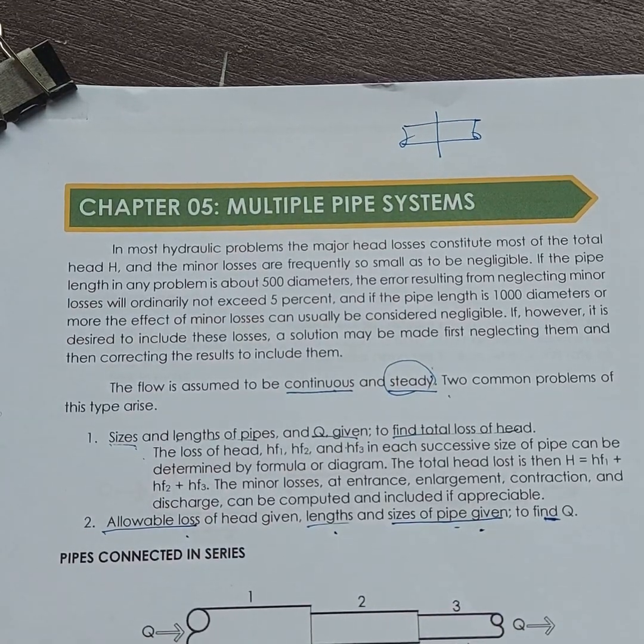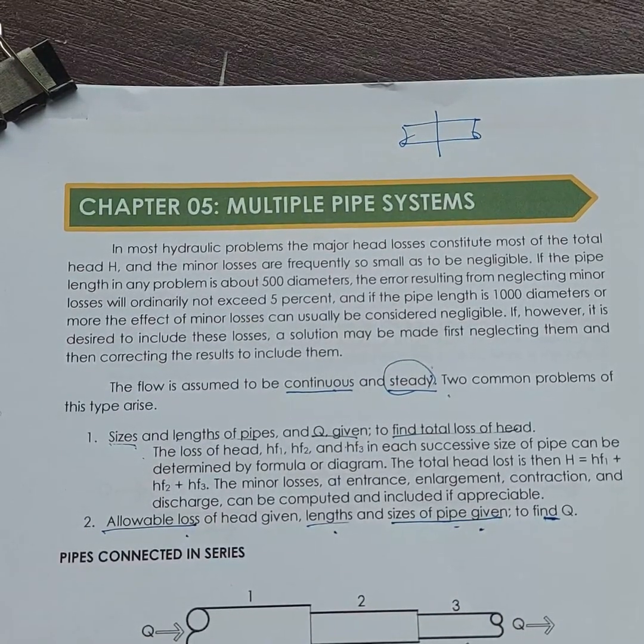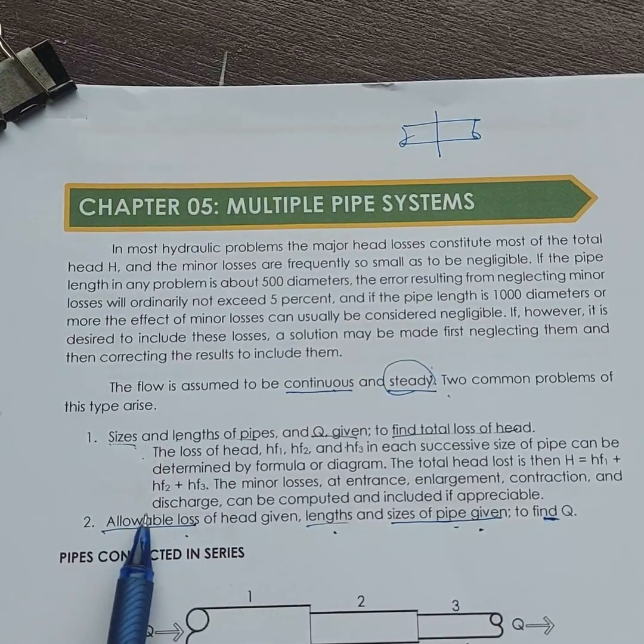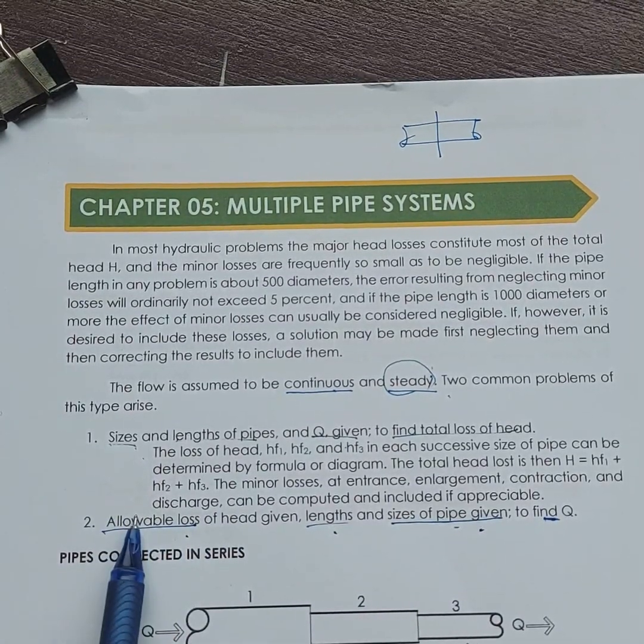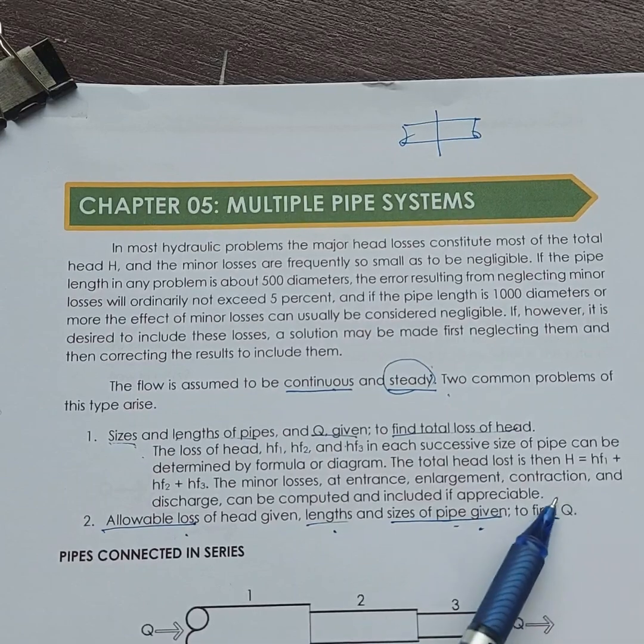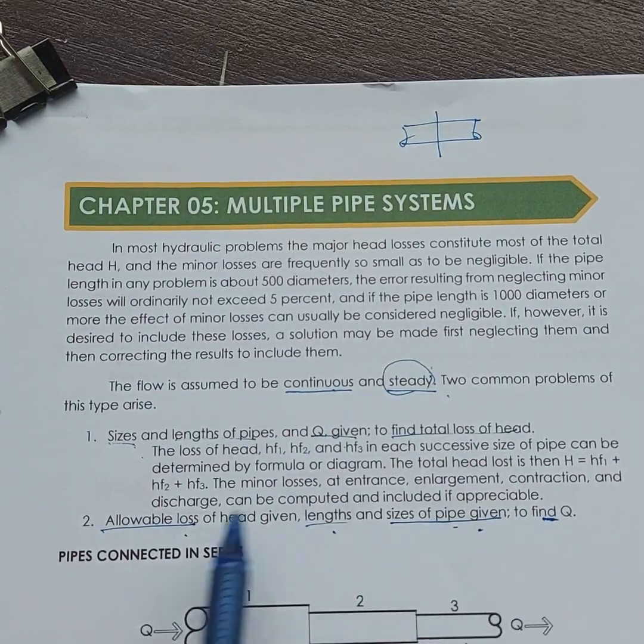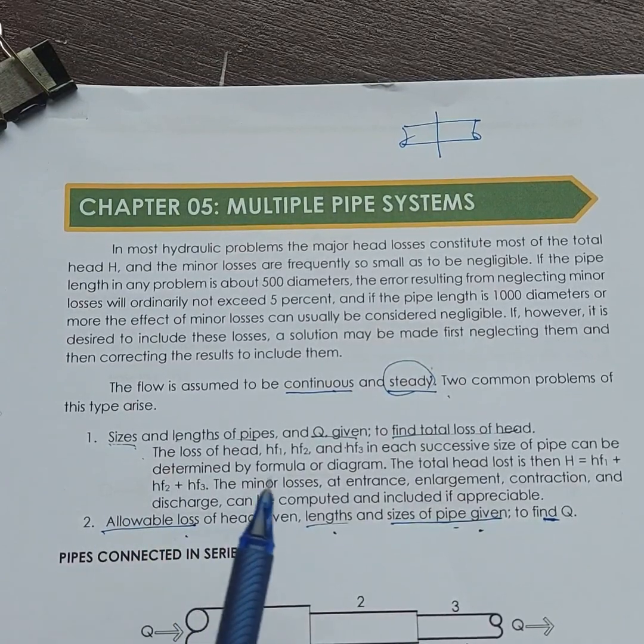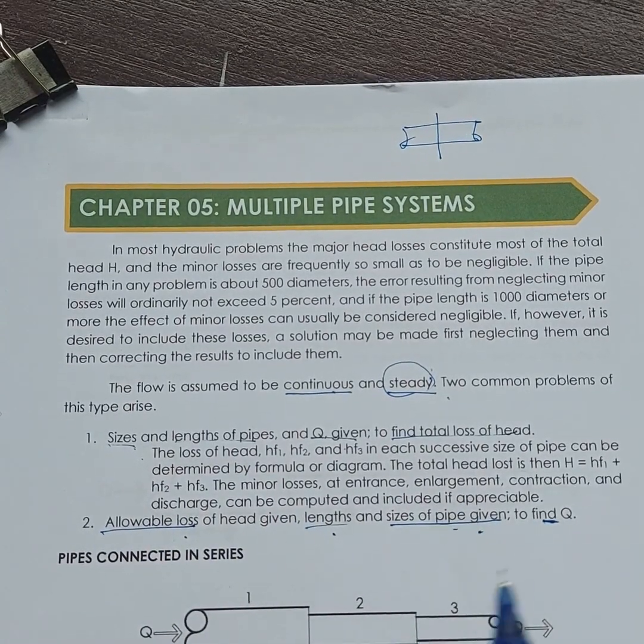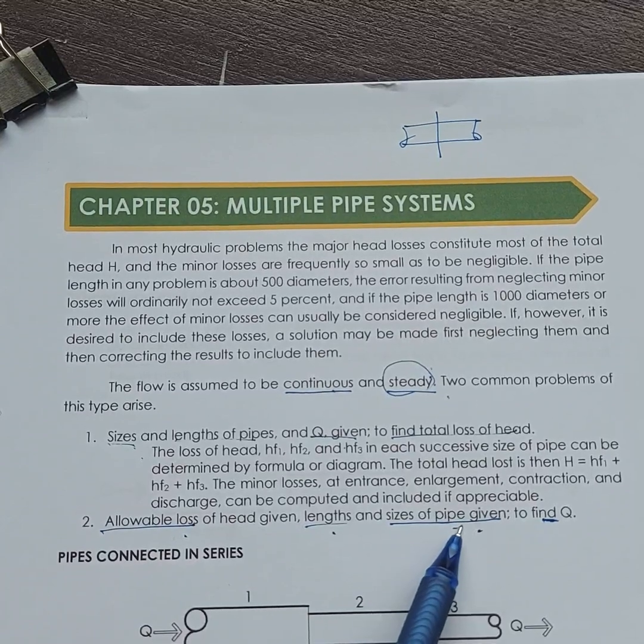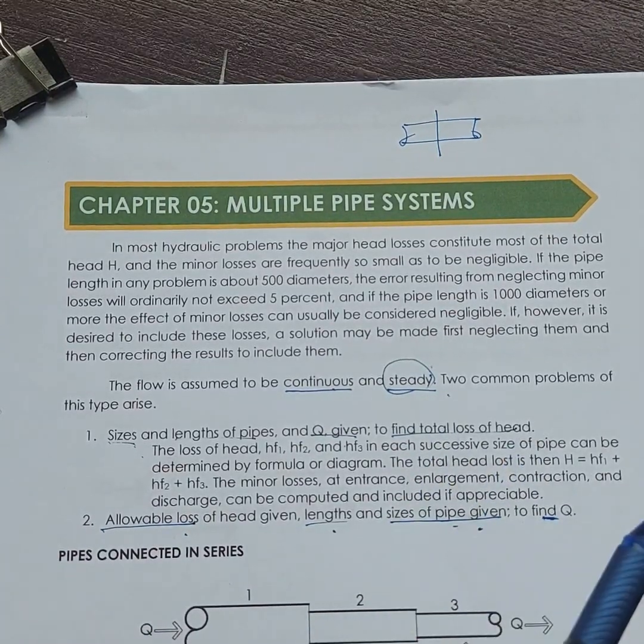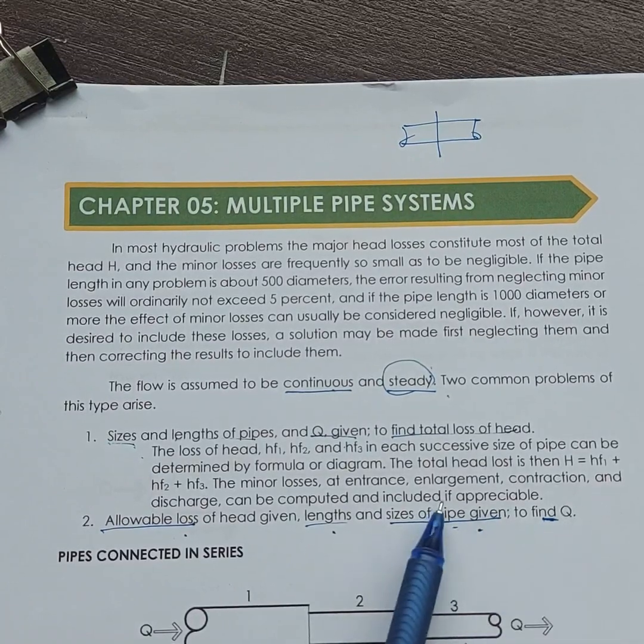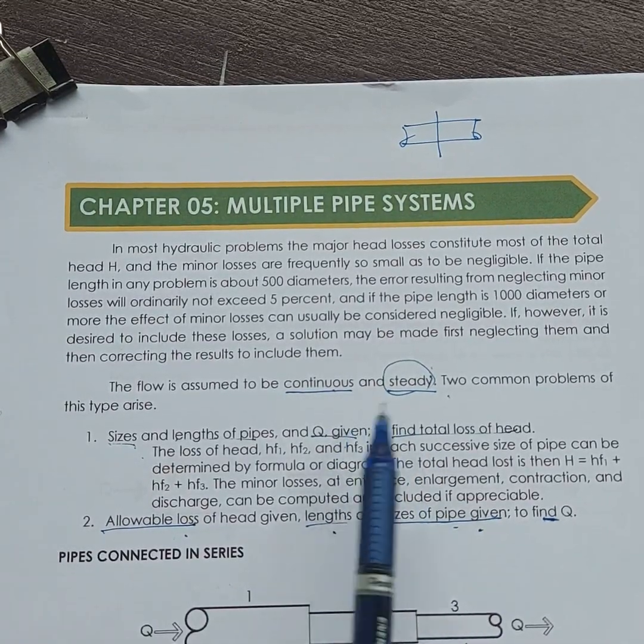It's difficult when the velocity or discharge varies relative to time. But we're going to assume that the flow is steady. It means the flow is constant. The variations in terms of the velocity or discharge would be neglected. Although in reality that happens. So the flow is continuous and steady. There are two common problems of this type. The first one is the sizes, the length of the pipe, Q is also given. So these are given: sizes, lengths, and Q given. We're going to solve for the total head loss.